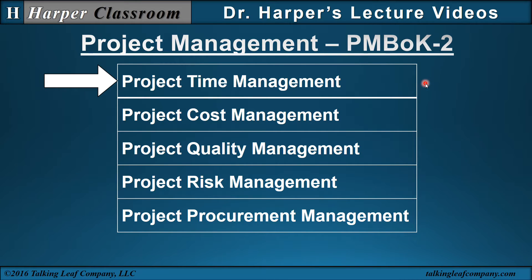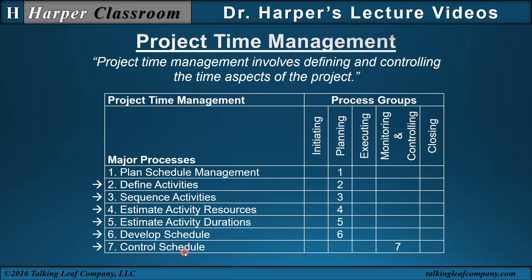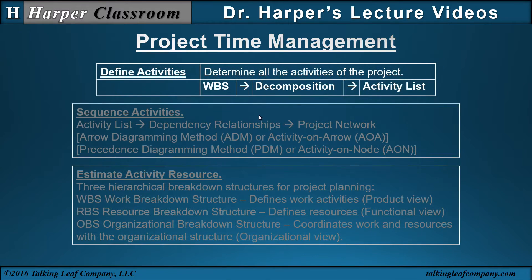Let's start with project time management. Project time management involves defining and controlling the time aspects of the project. There are seven major processes. This video will cover processes two through seven. Let's look at define activities. Define activities determines all the activities of a project. The work breakdown structure is decomposed into its different elements to identify the activity list for management.